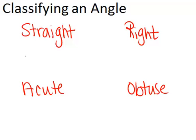So the first type, a straight angle, is an angle that is actually just a straight line. So it's all the way around like this, and a straight angle is always 180 degrees.